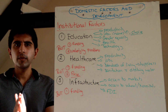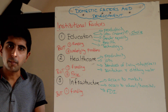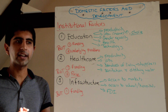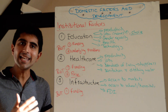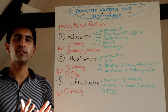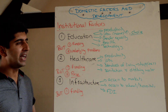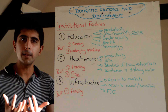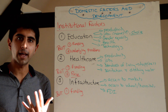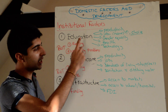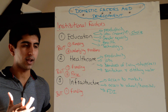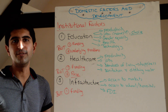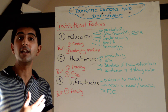Hi everyone. Now that we've understood what development means and different ways to measure it, let's look at institutional factors within a country that can lead to development — factors that are important for development to occur. In an essay, these are the three big ones that we must always come back to when we talk about development outcomes being achieved: education, healthcare, and infrastructure as major ways of getting a developing country to progress.